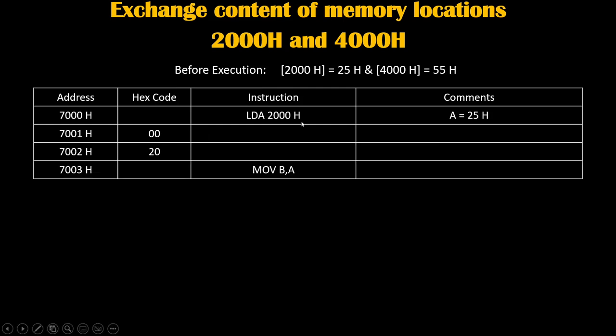The second instruction we will write is MOV B,A. We will move the value of the accumulator, which was 25h, into the B register. So our B register will become 25h. We have taken a backup of that value inside the B register, and the accumulator is now ready to take a new value.